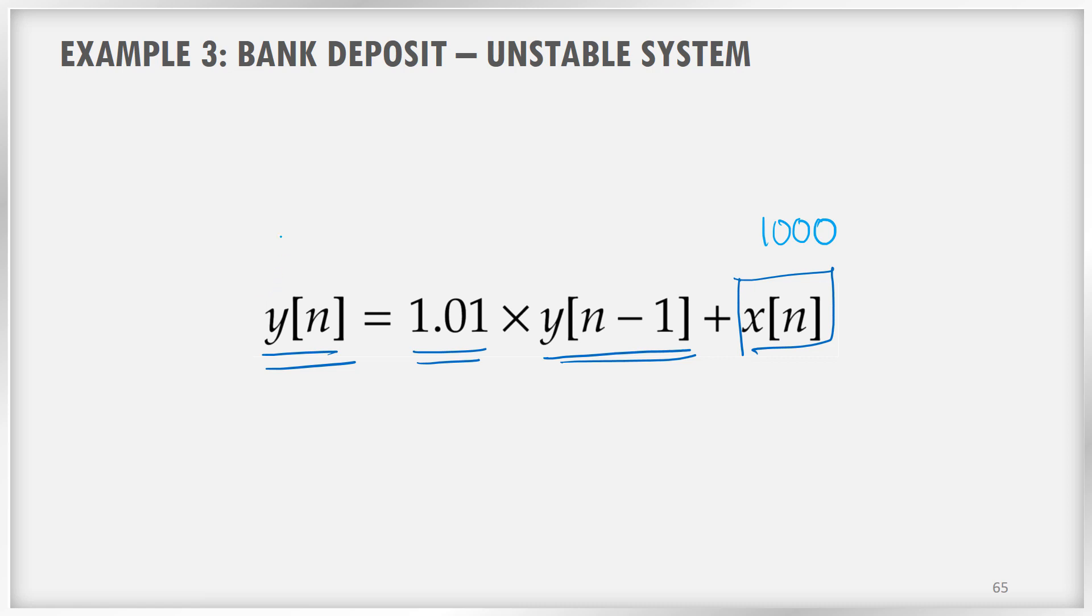In that case, because of this equation, after some time, maybe let us take 50 years, after 50 years, you can see that this amount will blow up because of the compound interest and it will become unstable. So this is an example of an unstable system.